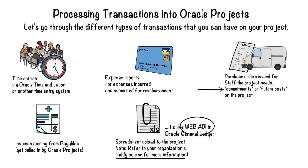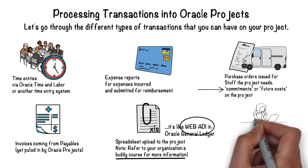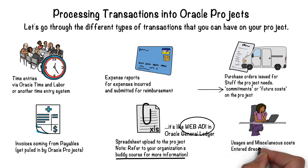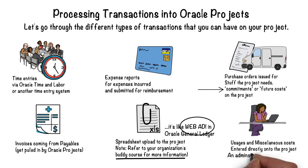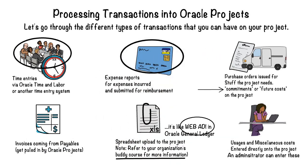What we can also do in projects is directly create transactions right onto the project. This consists of what we call usages and perhaps miscellaneous costs. If need be, an administrator of the project — assuming that person has the right access — can actually enter transactions like time cards and expense reports within projects and charge directly to the project.